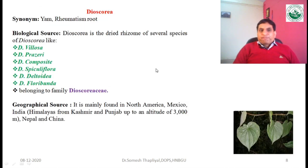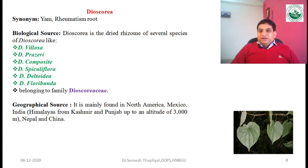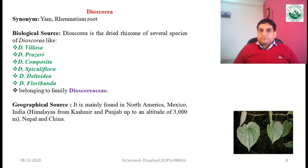The next drug is Dyscoria, commonly known as yam or rheumatism root. It is obtained from the rhizomes of various species such as Dioscorea villosa, Dioscorea praegeri, Dioscorea composita, Dioscorea spiculiflora, Dioscorea deltoidea, and Dioscorea floribunda, all belonging to the family Dioscoreaceae. In India, it is distributed in the Himalayan region from Kashmir to the northeast, and in Punjab, up to an altitude of 3000 meters. It also grows in Nepal, China, North America, and Mexico.